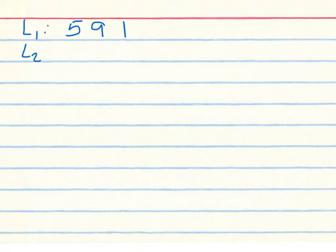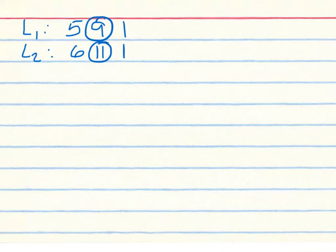In this practice problem, List 1 is 5, 9, and 1. List 2 is 6, 11, and 1. What we're going to compare is 9 from List 1 and 11 from List 2. First, bring up the average for List 1 — the average is 5.